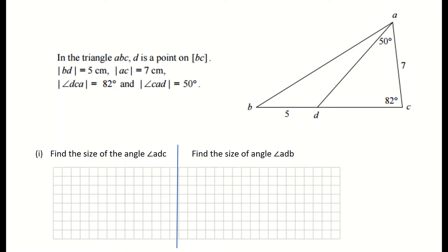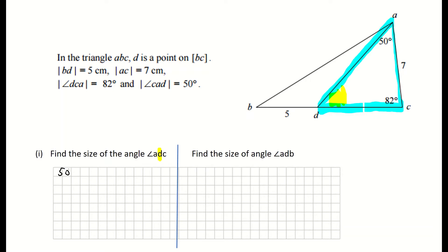Part one asks us to find the size of angle ADC. Starting at A, going down to D, and across to C — that's the angle located at D between those two line segments. I'll use the fact that the three angles in a triangle add up to 180 degrees. In triangle ADC, adding the 50 degrees and 82 degrees gives 132 degrees, then taking that away from 180 leaves angle ADC as 48 degrees.